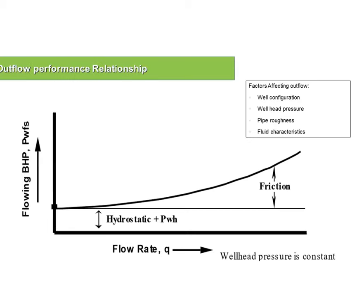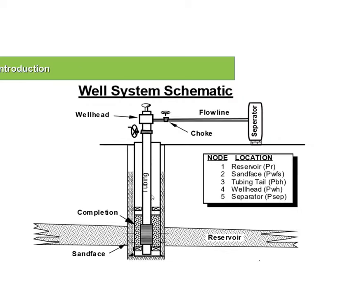The other important relationship is the outflow performance relationship. In order for the fluid to move from the bottom up to the top, it will encounter pressure losses. The pressure at the bottom must be higher than the wellhead pressure. You encounter wellhead pressure loss, friction (which is a factor of fluid rate), potential energy losses moving against gravity, and minor acceleration losses. The two main parameters are hydrostatic pressure losses and friction.